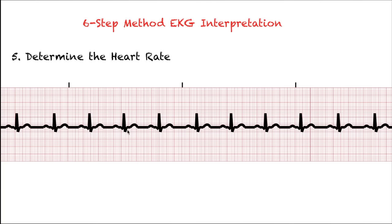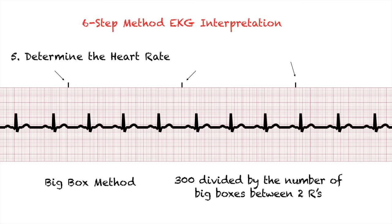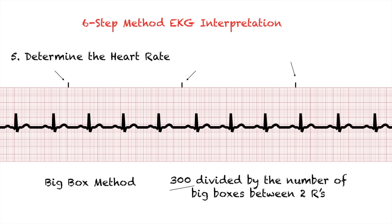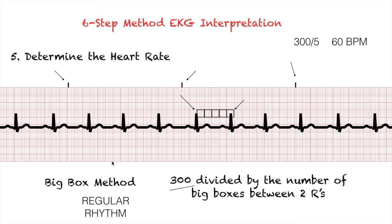The second method to calculate heart rate is the big box method. Divide 300 by the number of big boxes between two R waves. For example, if there are five big boxes between R waves, then 300 divided by 5 equals 60 beats per minute. This method works better for regular rhythms only, and it's the method to use if you don't have a six-second strip in front of you.